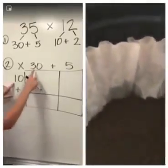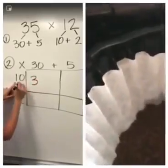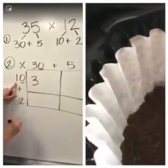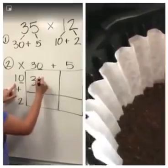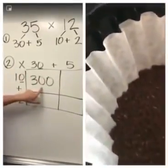So I like to say 1 times 3 is 3. And how many zeros do we have? We've got 2, so we attach them to the end of the number. So 10 times 30 is 300.